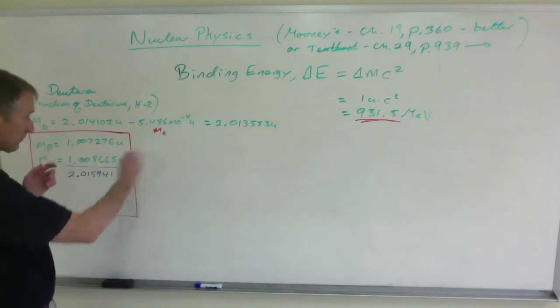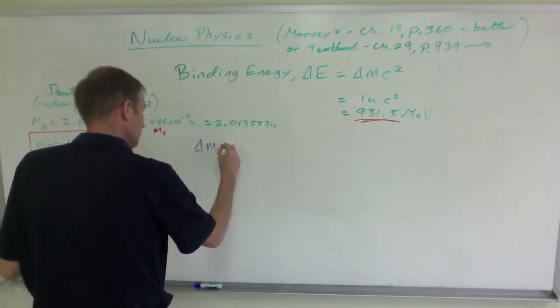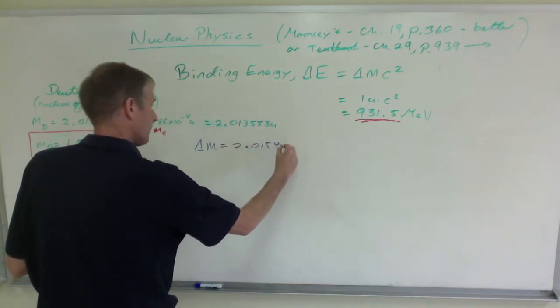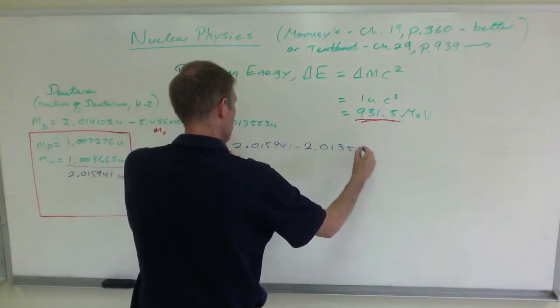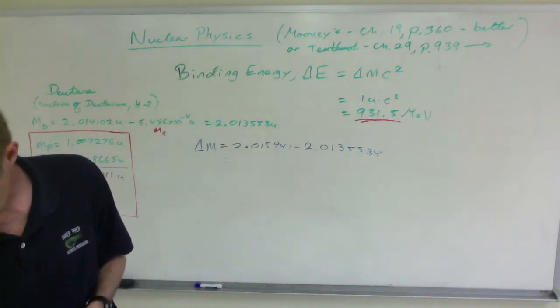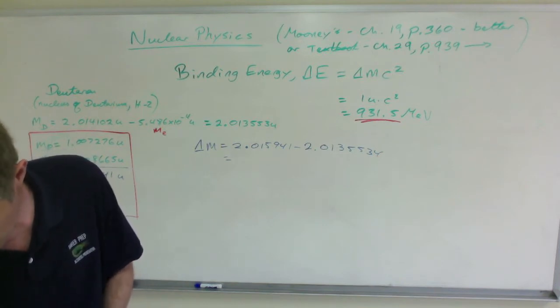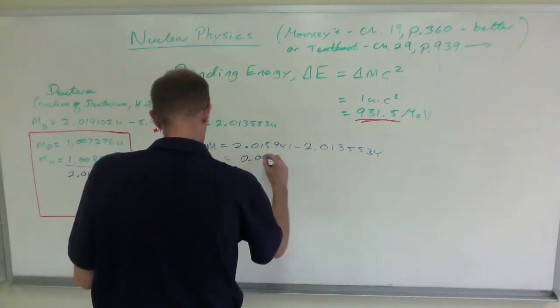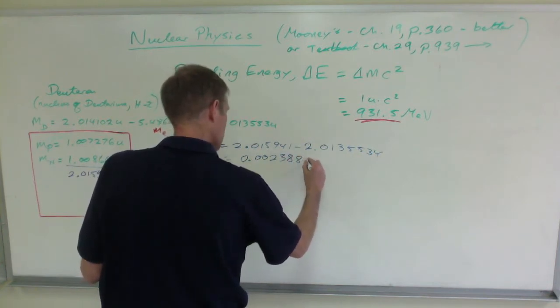So to find delta M, the difference between these, delta M is going to be 2.015941 less 2.0135534. That comes out to be 0.002388 u.